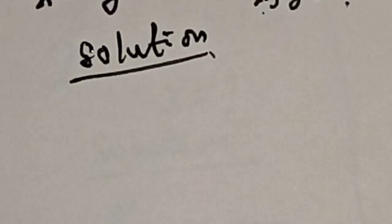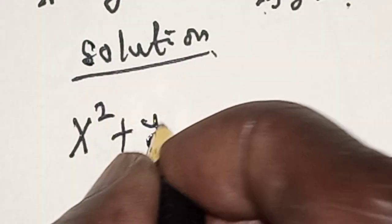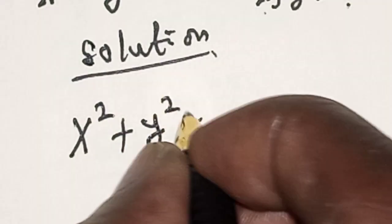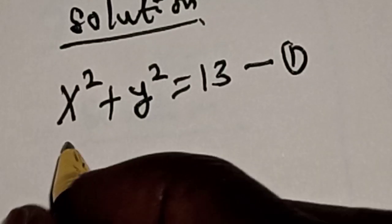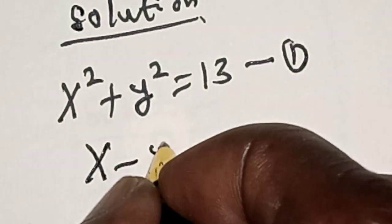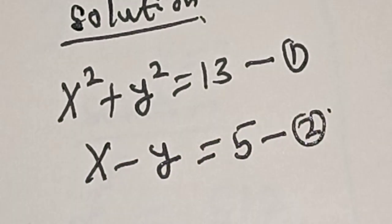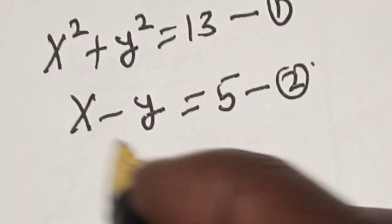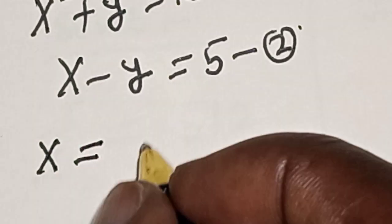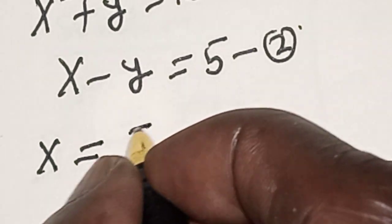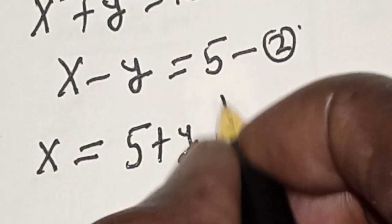We have the given equation x squared plus y squared is equal to 13 — let's call this equation 1. Then x minus y is equal to 5 — let's call this equation 2. Now from equation 2, let's make x the subject of the formula: x is equal to 5 plus y.